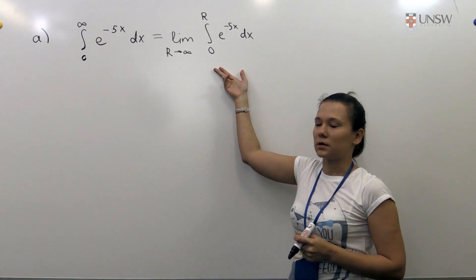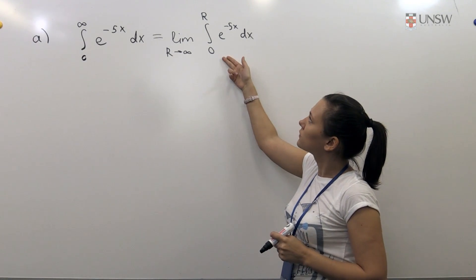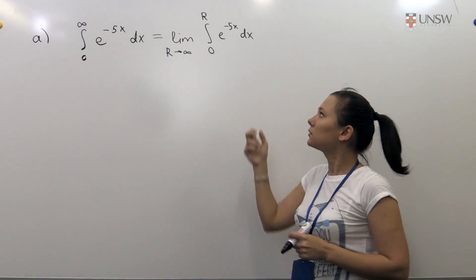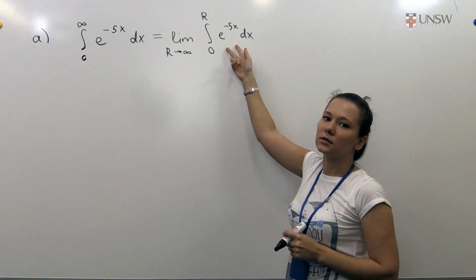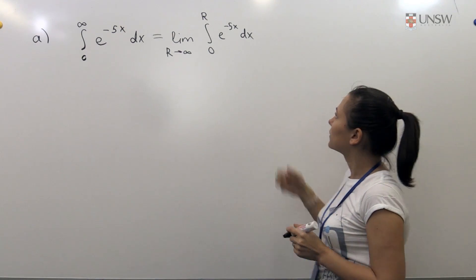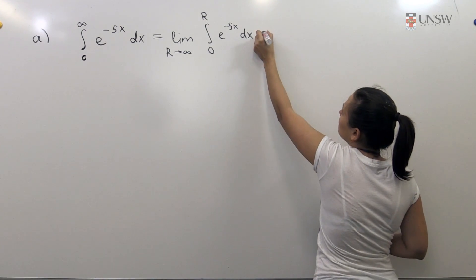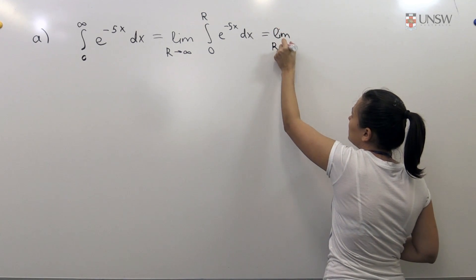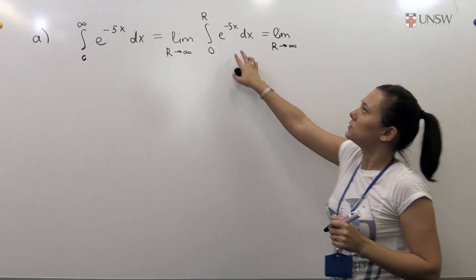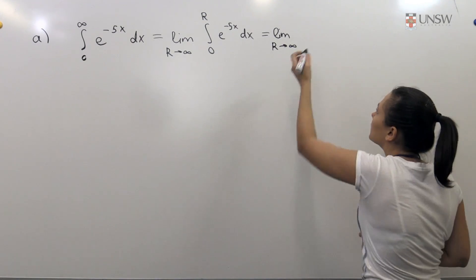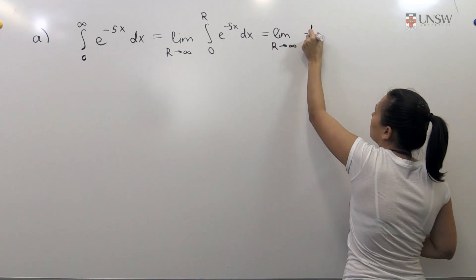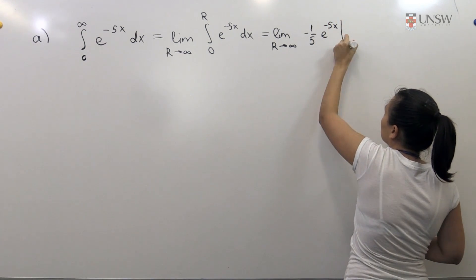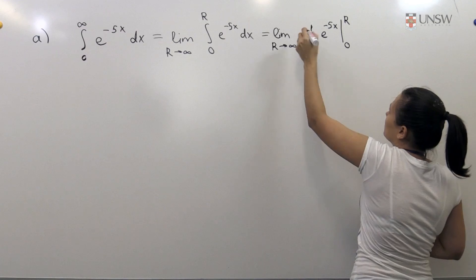So what do we have here? We now have the integral from 0 to r, which is just a usual integral, and our function inside is an exponential. So we can immediately find this integral. We will rewrite the limit, and the antiderivative of e^(-5x) is minus 1 over 5 times e to the power of minus 5x, then we replace the limits of integration.